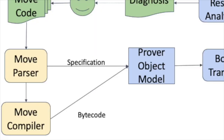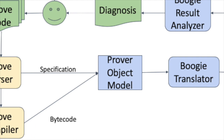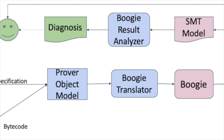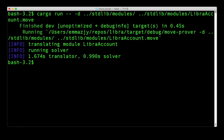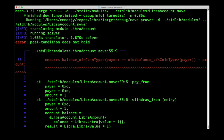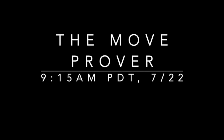The specifications along with the Move code are translated to the Boogie intermediate verification language, which calls an SMT solver to check for satisfiability. The prover then interprets the Boogie output and either returns with no errors or produces counter-examples with error messages on the source code level. For more information and examples, check out our presentation.